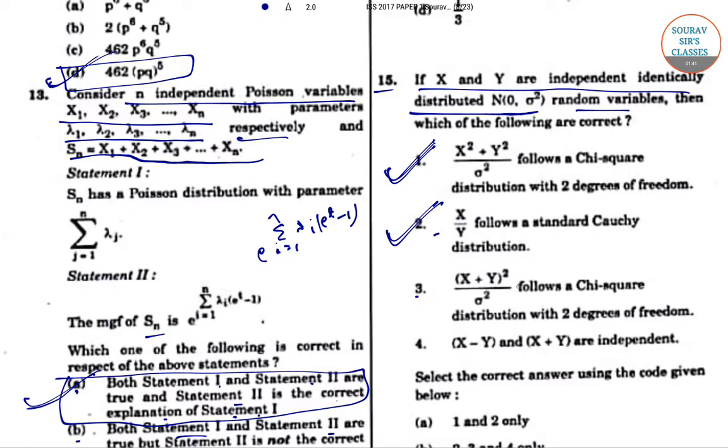Statement 3: (X + Y)²/σ² follows a chi-square distribution with 2 degrees of freedom. This is incorrect. It is X² + Y², not (X + Y)². Thus, statement 3 is incorrect.